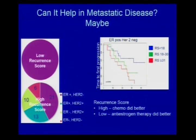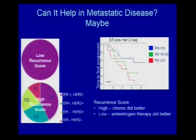What about metastatic disease? These assays might have a role in metastatic decision-making. The recurrence score is prognostic in metastatic disease, and intriguingly — though this is a small study needing confirmation — it may help decide whether to use chemotherapy first or anti-estrogens first in ER-positive HER2-negative metastatic breast cancer. That would be genuinely helpful in the clinical realm.